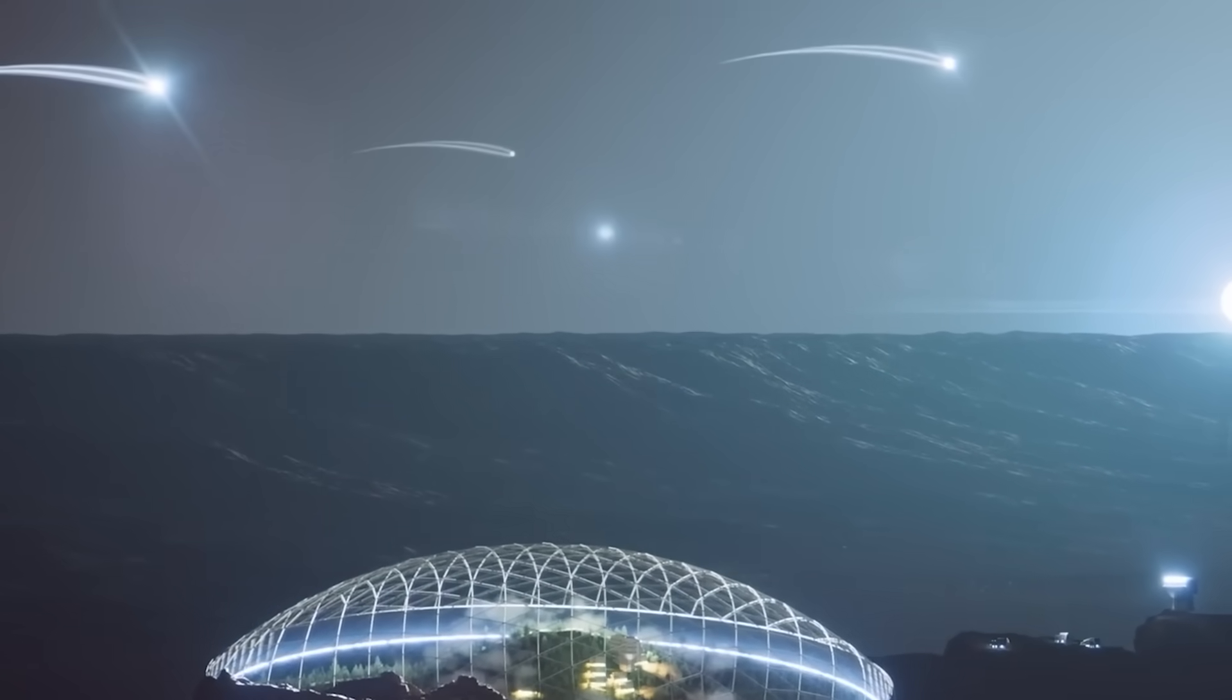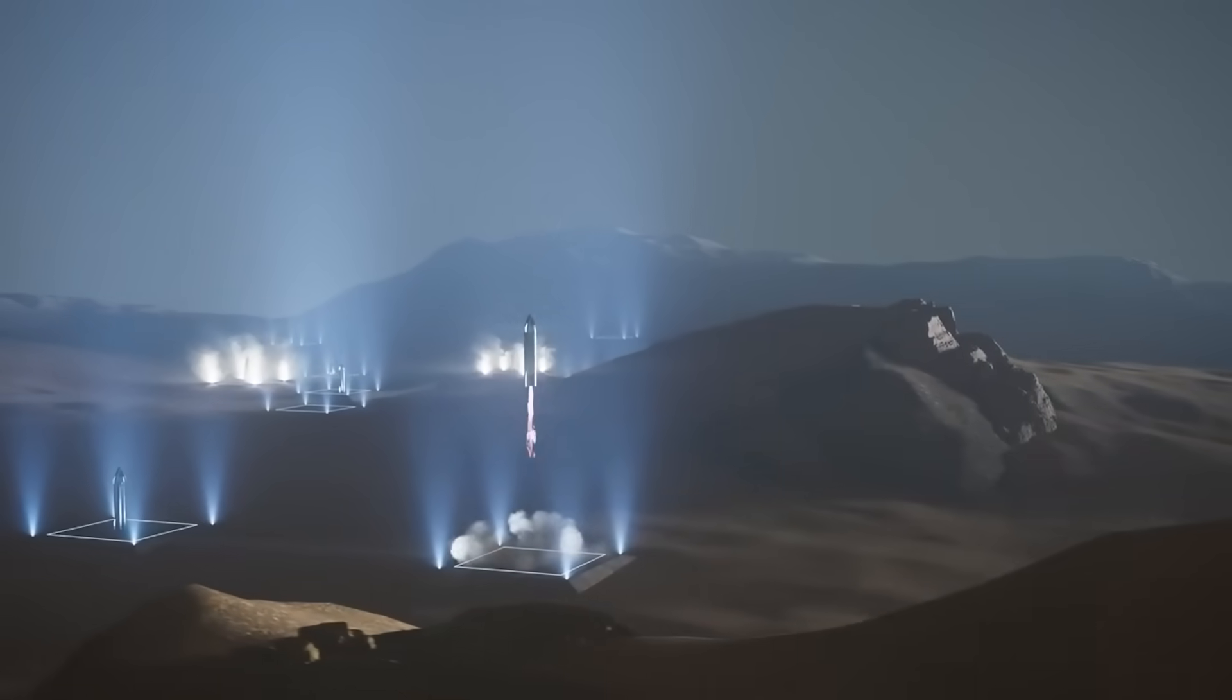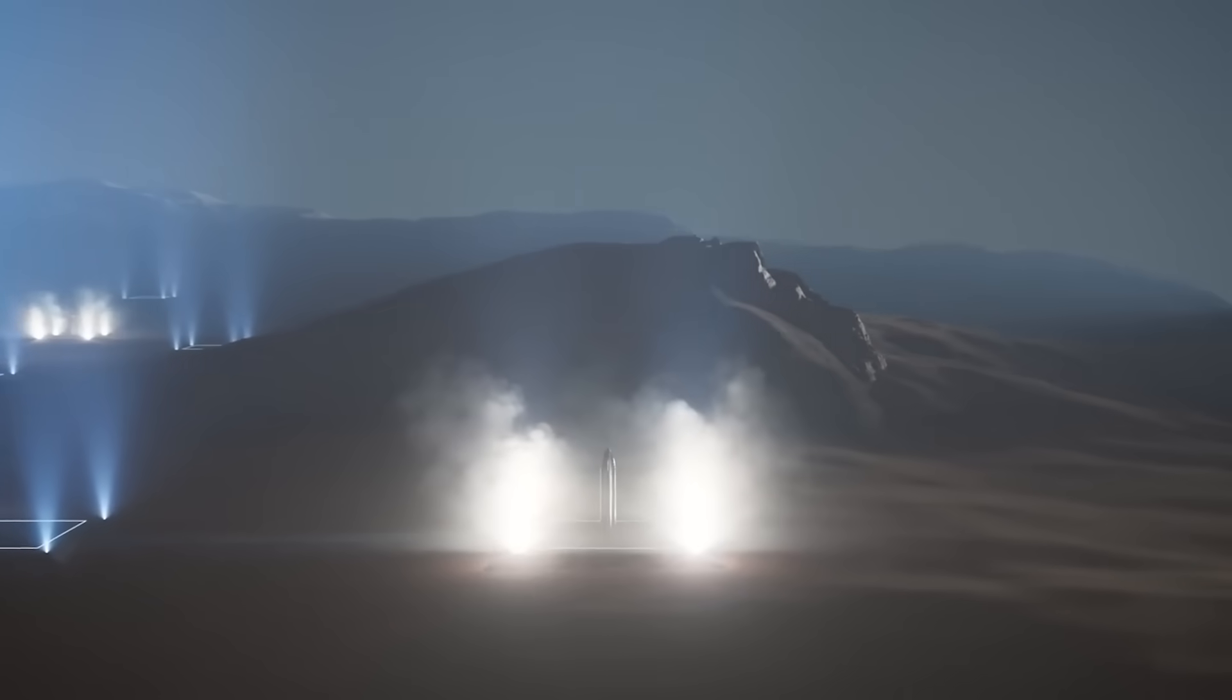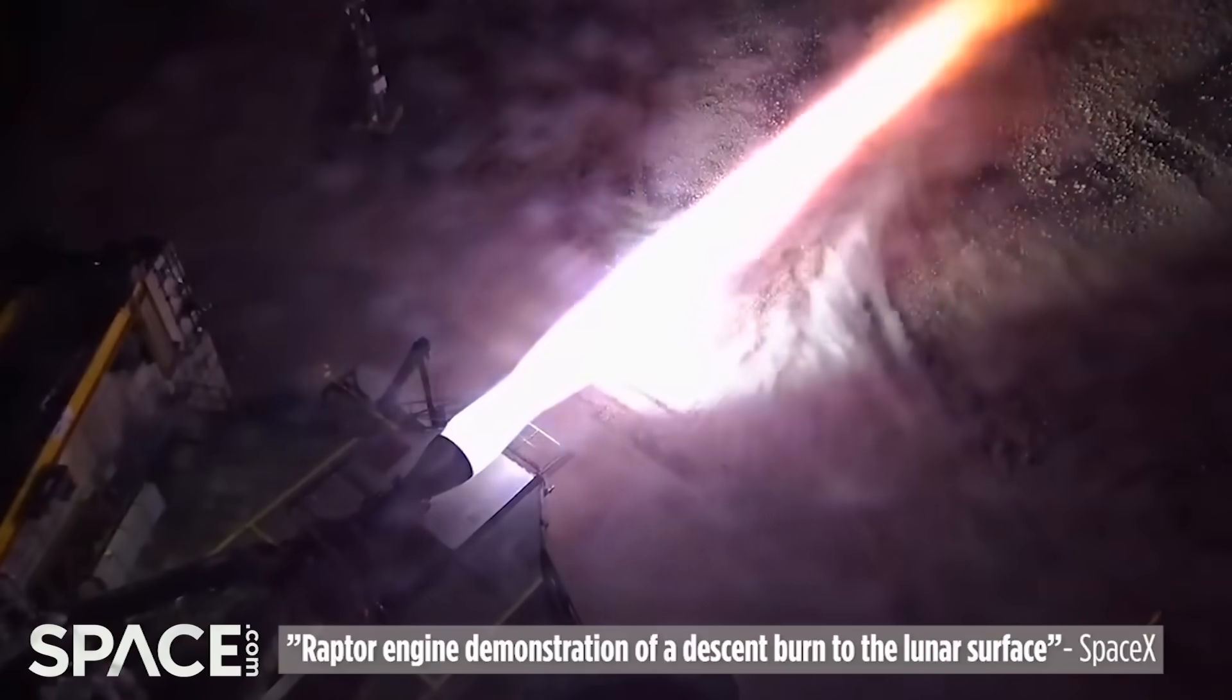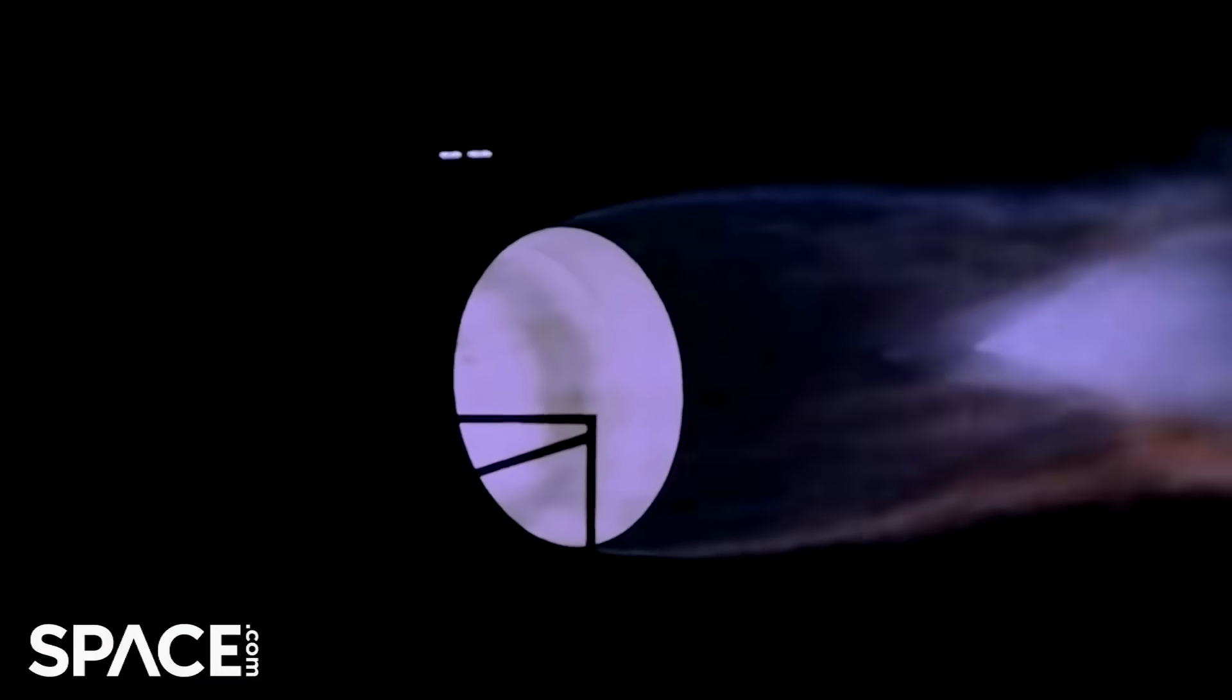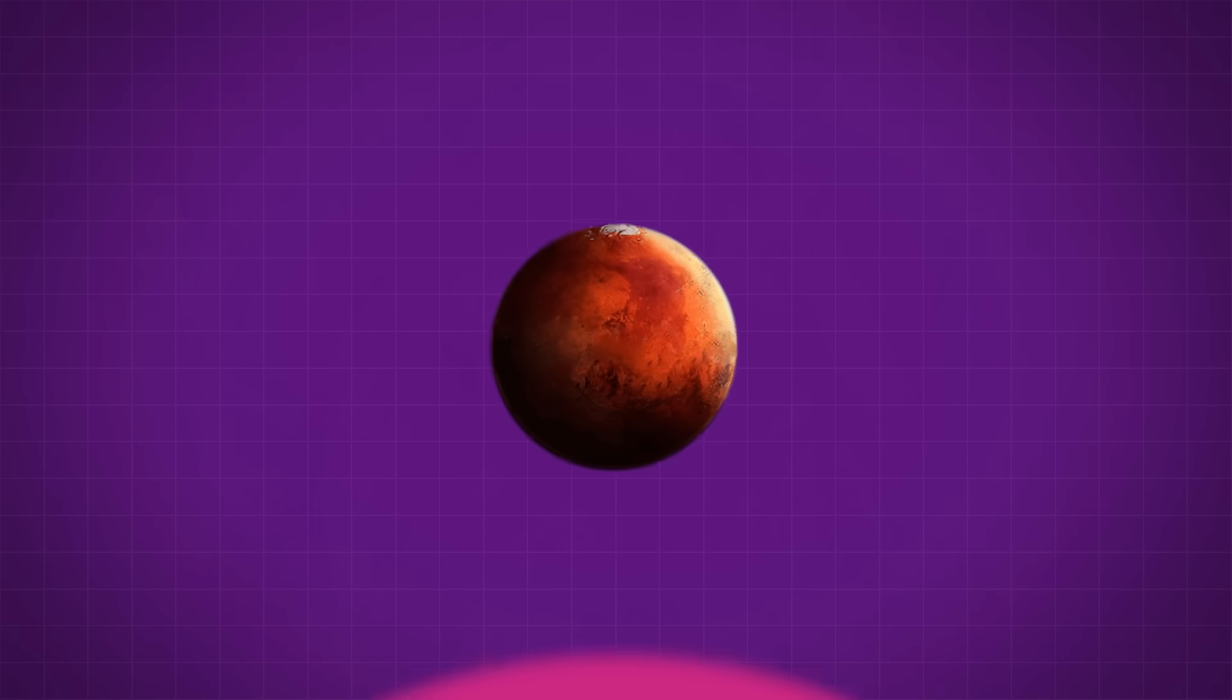SpaceX is working hard on increasing the delta-V of the Starship. They want to make Starship V2 longer with bigger fuel tanks while also making it lighter at the same time and adding three more Raptor vacuum engines. The third version of the Raptor is currently in design and will probably offer higher efficiency and therefore more delta-V potential. Now, there are other more long-term solutions as well.